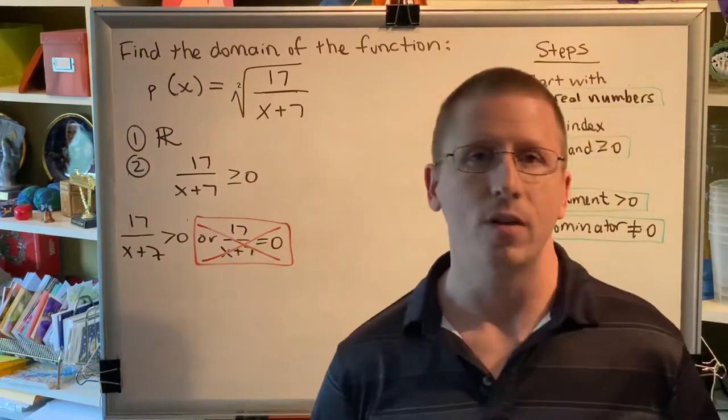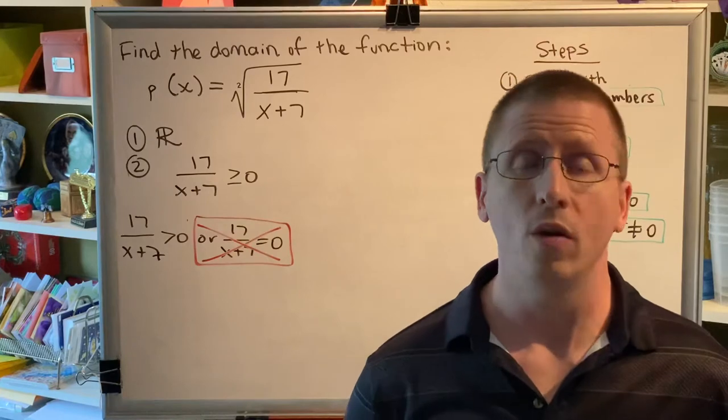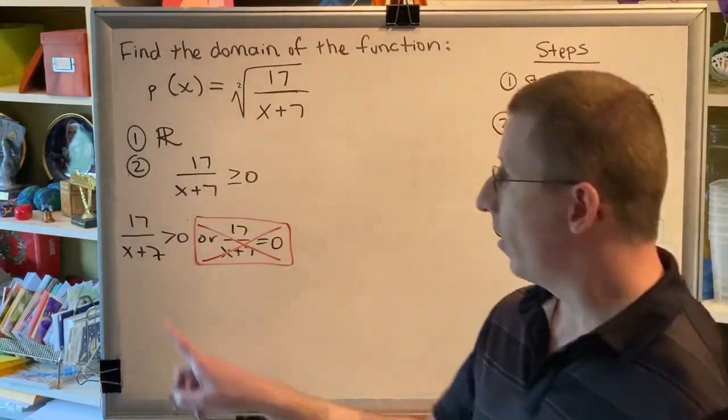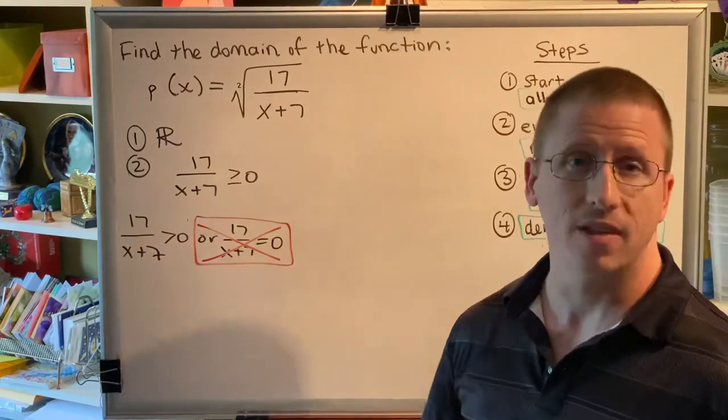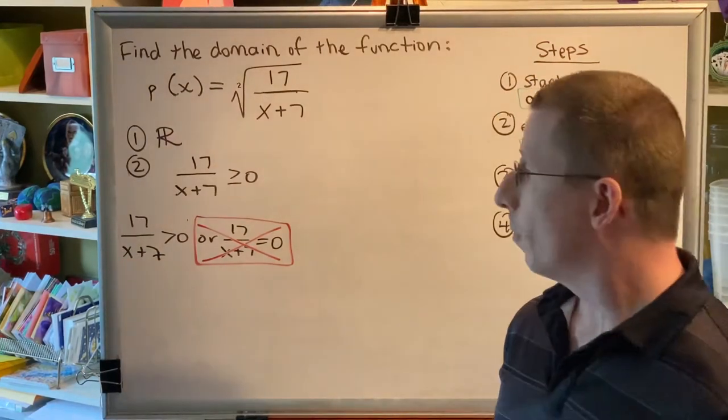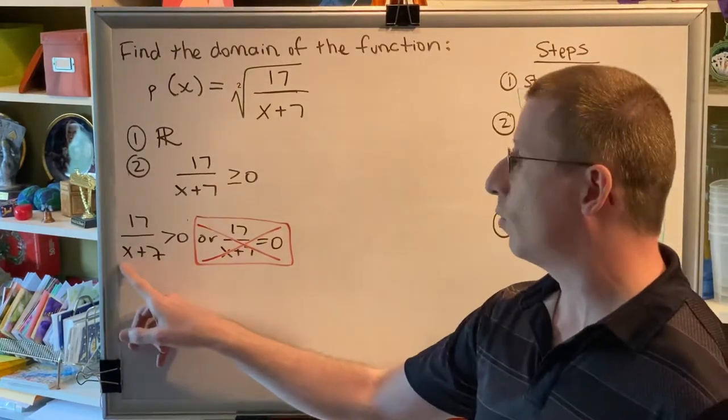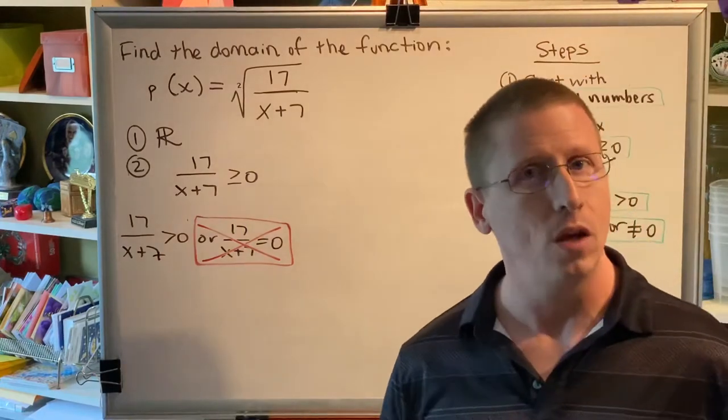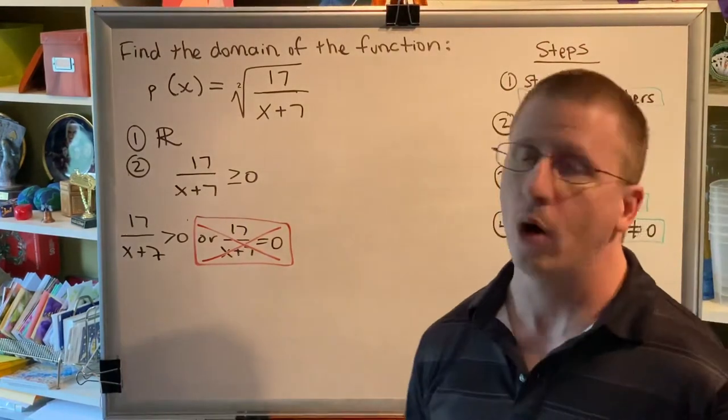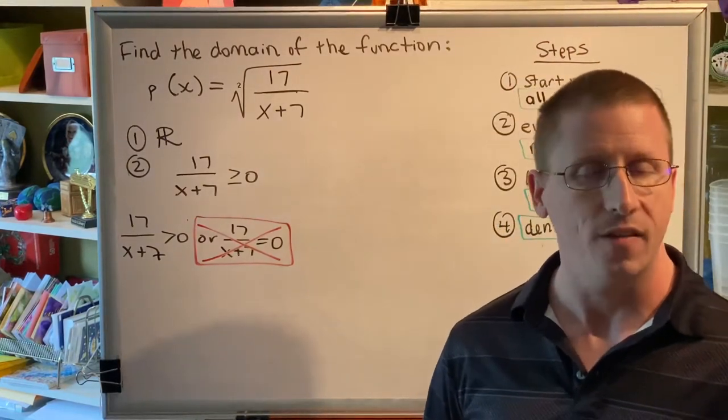So, is x plus 7 positive, negative, or zero? The answer is we don't know. We don't know what x is. If x is a number like 3, then x plus 7 would be 3 plus 7, which is 10, which is positive. And we would not flip the sign. But if x is a number like negative 10, then x plus 7 would be negative 10 plus 7, which is negative 3, which is negative. And we would flip the sign. Because we don't know the value of the variable, we cannot multiply both sides by x plus 7.